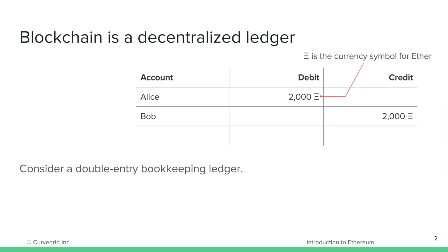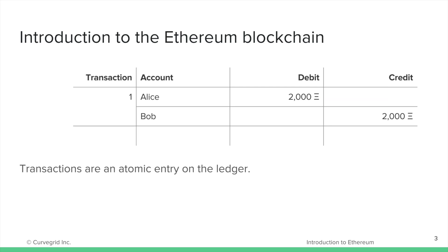Decentralized means that many copies of the ledger are distributed amongst all of the participants in the Ethereum blockchain. Each transaction on the Ethereum blockchain ledger is atomic, which means that either the entire transaction succeeds or the entire transaction fails. This is a key feature of what keeps the entire system consistent, and part of the magic of blockchain is that it does this without a central authority, such as a bank.